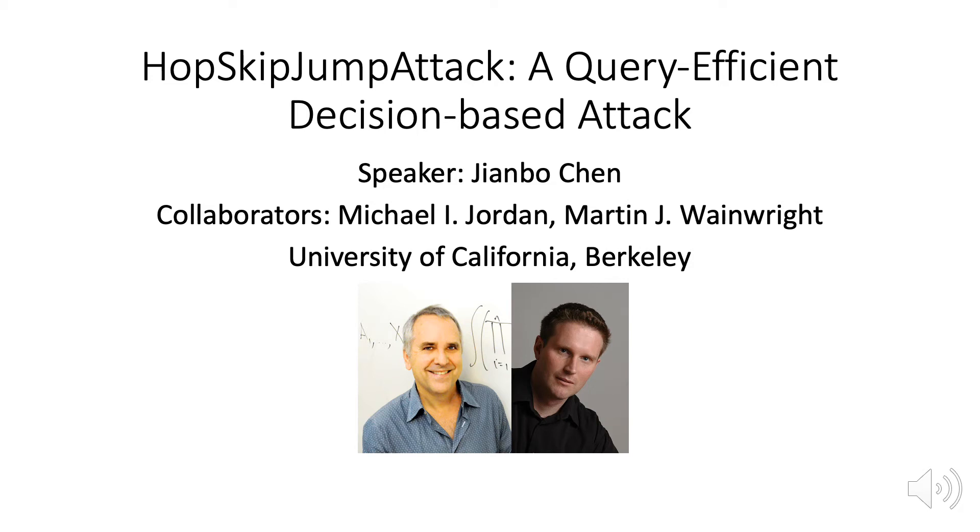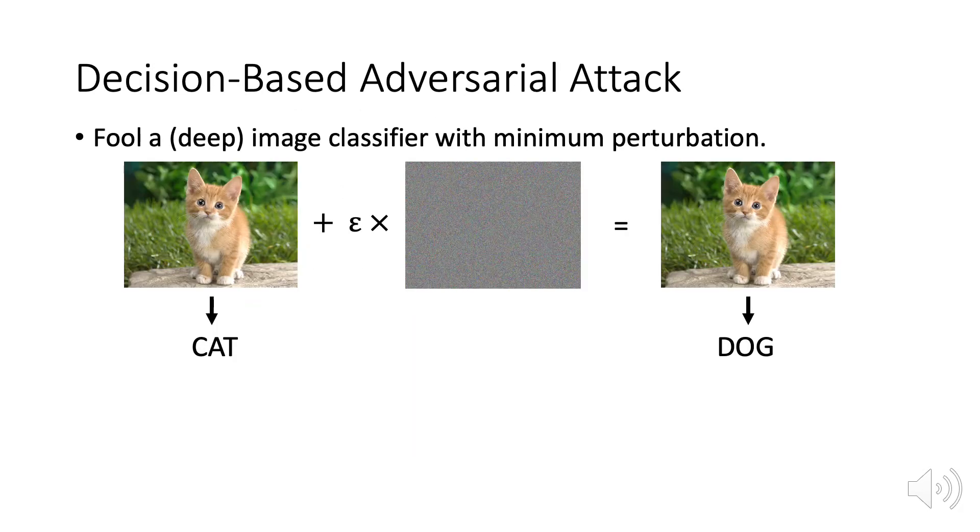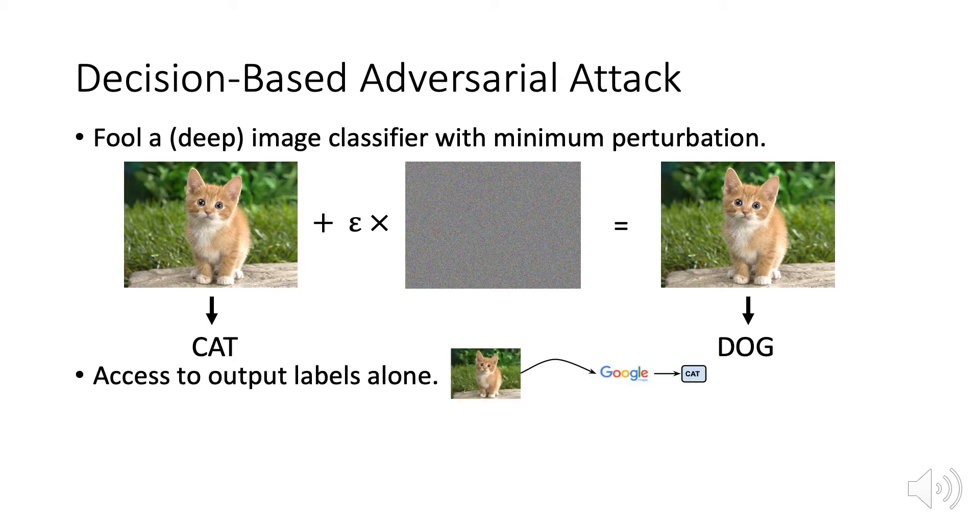We will talk about HopSkipJump attack. Our goal is to fool an image classifier with minimal perturbation. We assume the only thing available to the attacker is the output label.